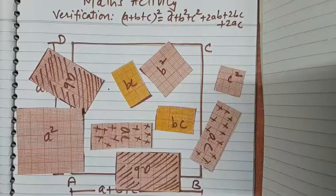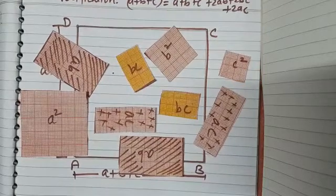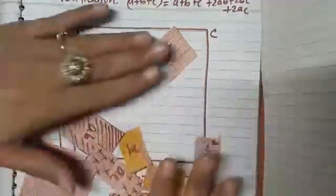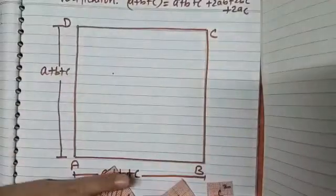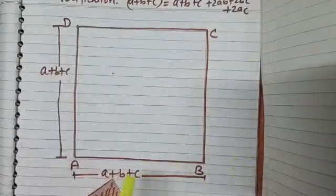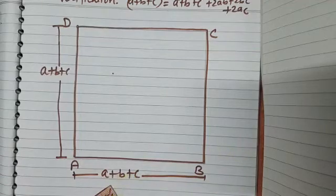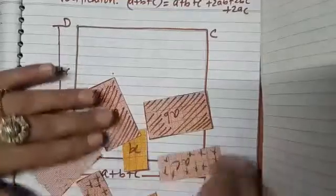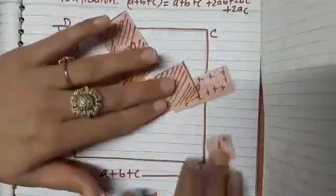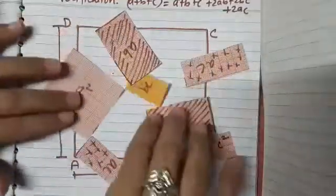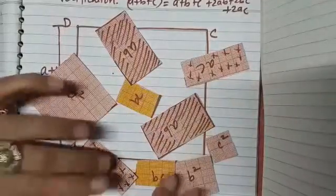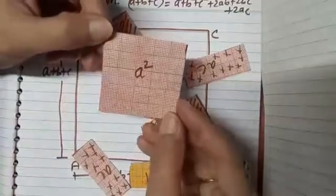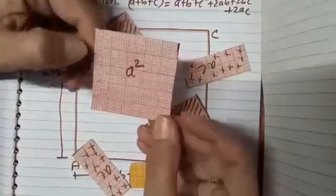So here you can see what I have done. I have drawn a square whose each side is A+B+C, and I have done cutouts here. These cutouts are representing the pieces. Now you can see this is the piece representing the area A².